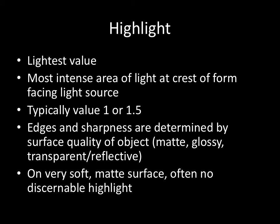The highlight is your lightest value and the most intense area of light. It's at the crest of the form facing the light source. It's typically a value 1 on a 1-through-10 scale, where 1 is white — so it's typically a value 1 or 1.5. The reason is that the highlight is actually a reflection of your light source, so you don't see the color of the object in a real highlight; you just see the reflection of the light source. Even when the highlight is on something really dark like blue or black, the highlight itself will be a 1 or 1.5.